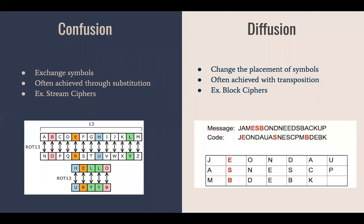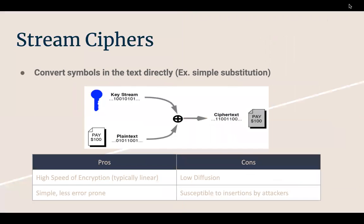There are two concepts in cryptography for changing the meaning of text when encrypting: confusion and diffusion. Confusion is when you exchange symbols — it's just substitution, so the Caesar cipher is an example of confusion. Diffusion is when you actually change the placement of the symbols.